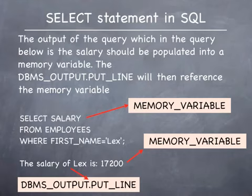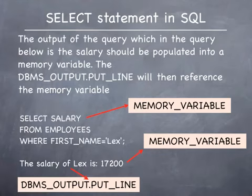On the slide, imagine that the salary retrieved by the query is put into a memory variable. After the memory variable has been populated, the contents of the memory variable can be accessed using the DBMS output line statement, which allows you to display the values of variables with strings in meaningful ways.